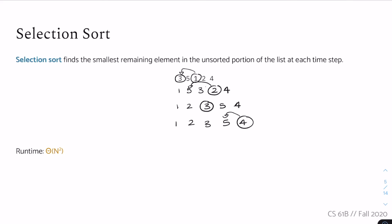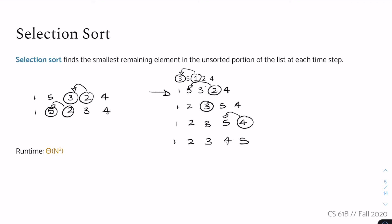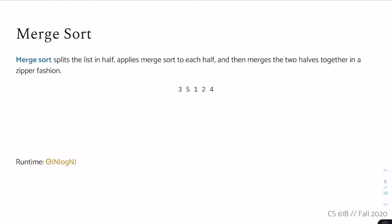Then we look at four, swap it with five, and get one, two, three, four, five. The swaps work by finding the smallest element and swapping it into place — it takes n time to find the smallest element at each step, and you have to do that n times. So again the runtime is Θ(n²).